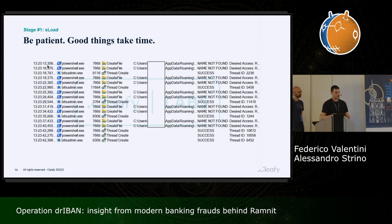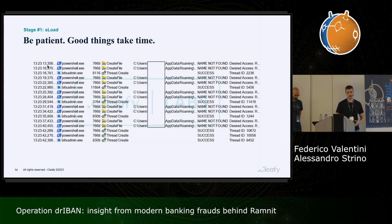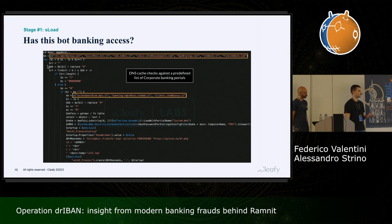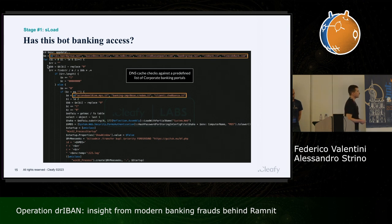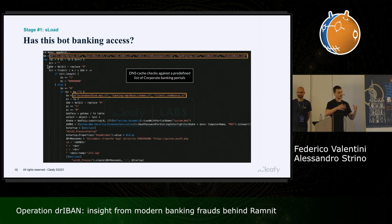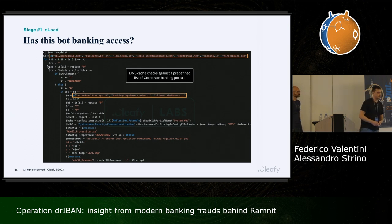Their goal is to infect corporate Windows workstations — but not all of them, only machines with actual access to banking portals. They build a simple routine distributed and executed via Sload: a second-stage payload that checks a list of hardcoded corporate banking portals against the DNS cache of the Windows machine, and sends the results back to the command and control. This gives threat actors a clear picture of which and how many potential victims they have under their control.